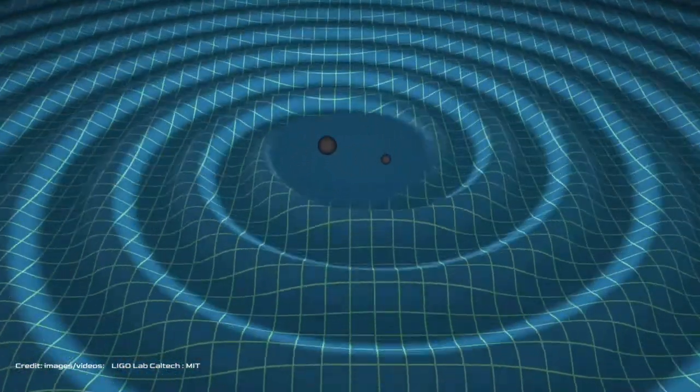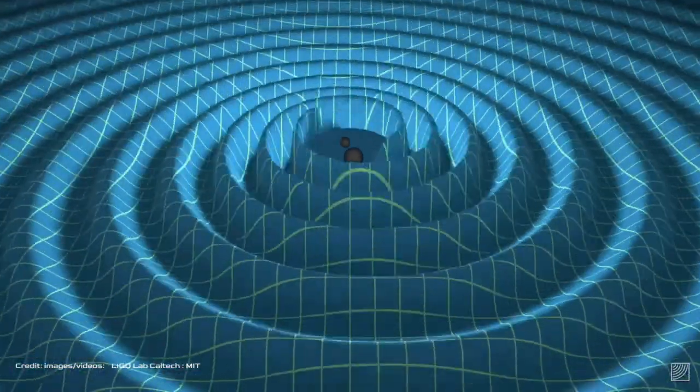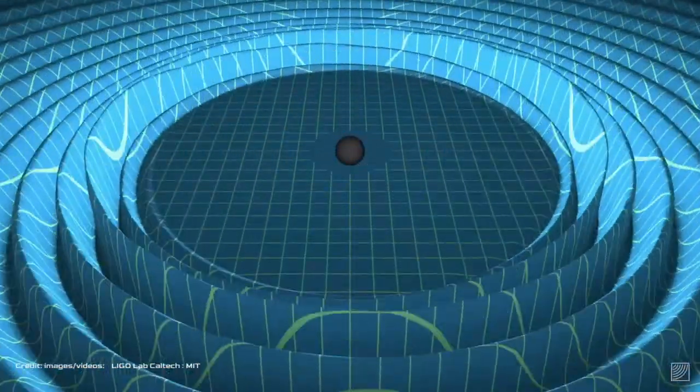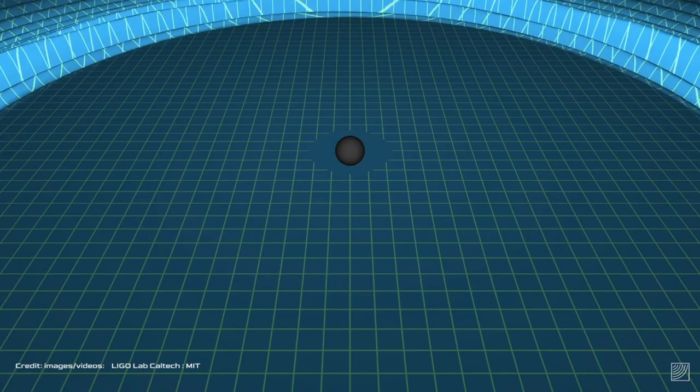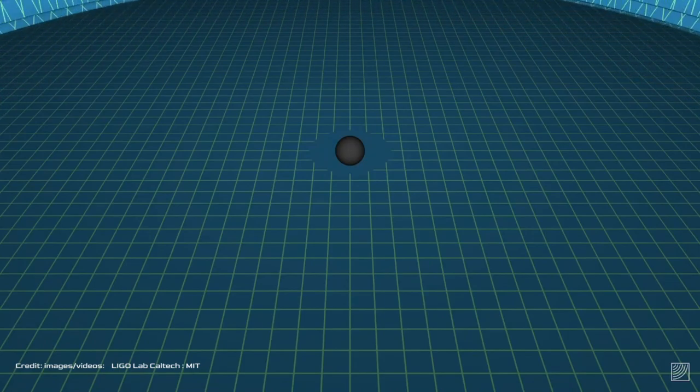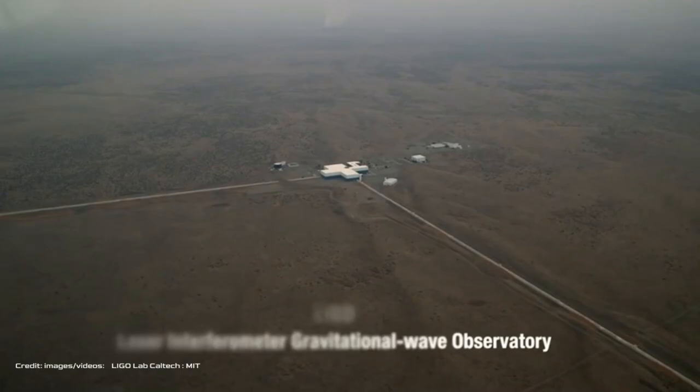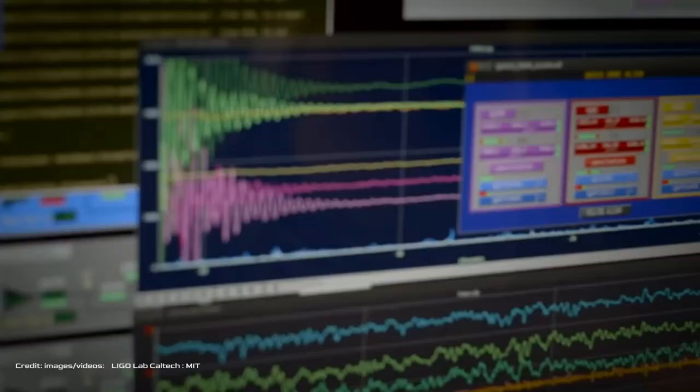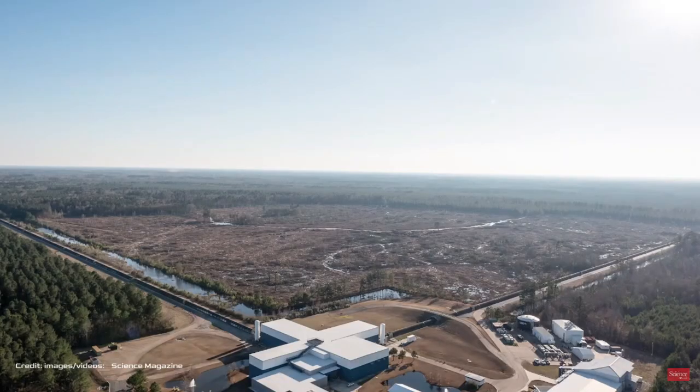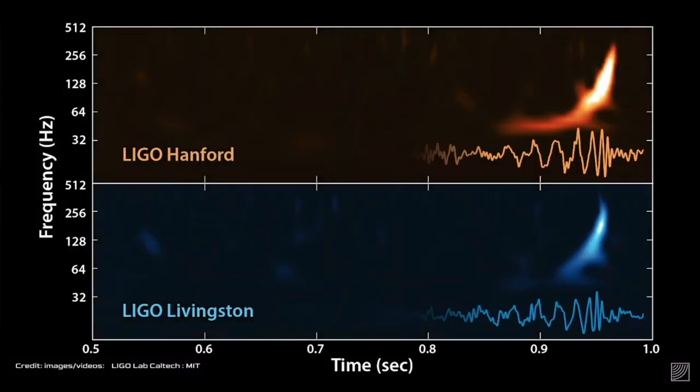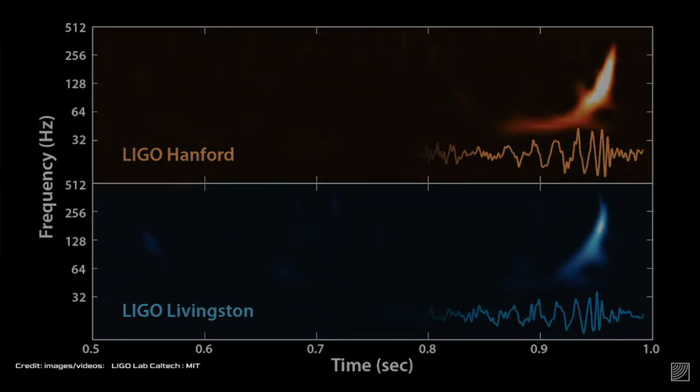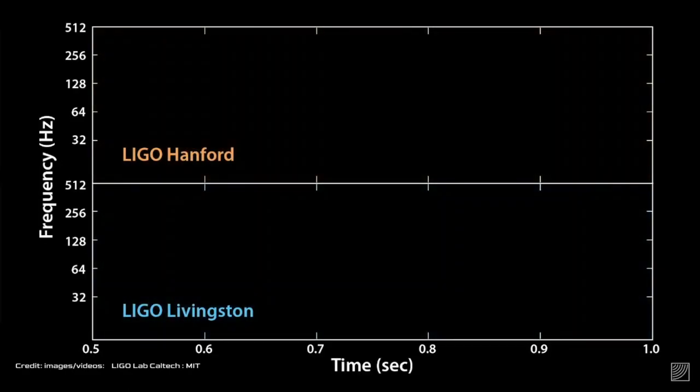Gravitational waves were predicted by Einstein in 1916, but they were not directly detected until 2015 by the Laser Interferometer Gravitational Wave Observatory, LIGO, a network of two detectors in the United States. On September 14, 2015, two detectors of the LIGO Observatory independently recorded a signal of gravitational waves from a colliding system of two black holes. The detection was announced in 2016 and was awarded the Nobel Prize in Physics in 2017.